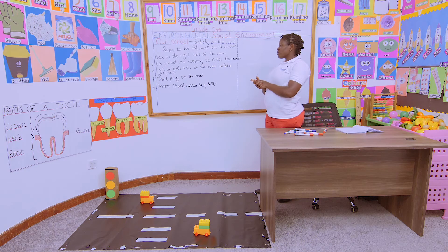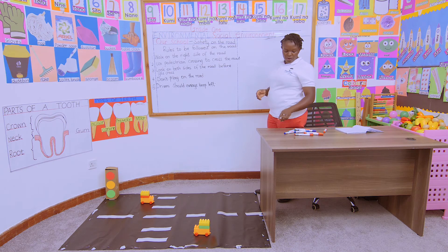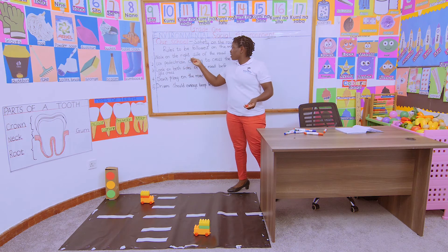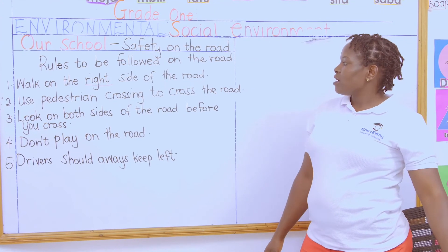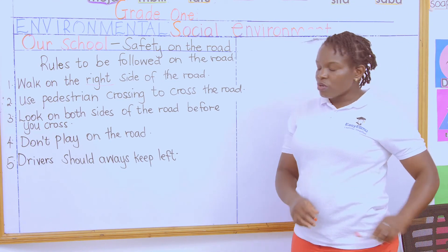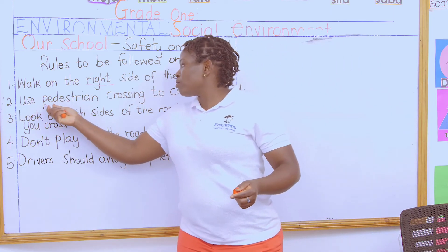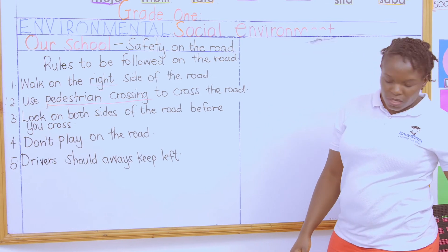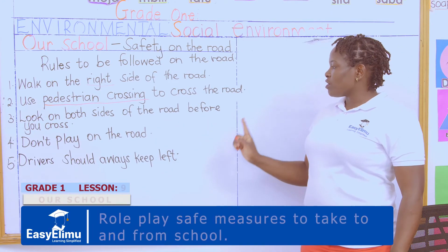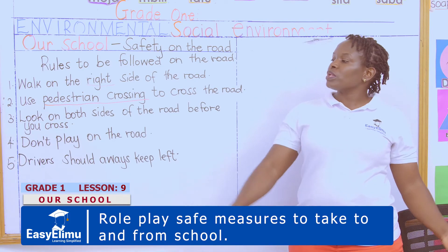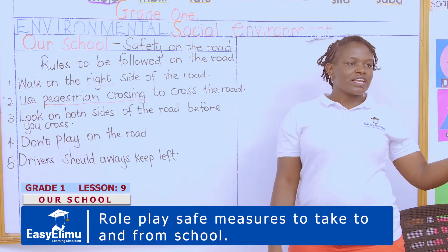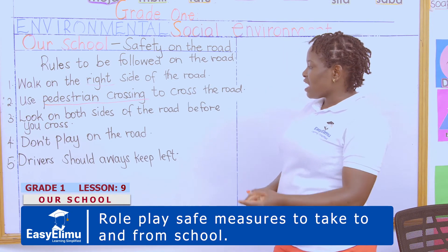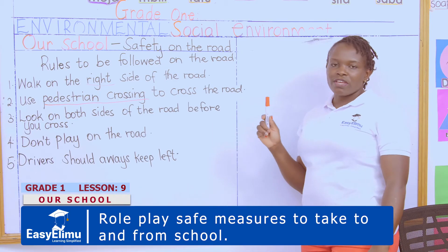When walking on the road, which side are you supposed to use? Walk on the right side. Use the pedestrian crossing to cross the road — don't cross at any other point. Look on both sides of the road before you cross: look left, look right, look left again. If the road is clear, cross quickly without running.